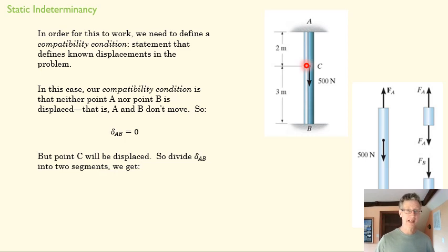We know C is in the middle, so AC, the length of AC, plus the length of CB, is going to add up to this, right? And so we can say that the change in the length of AC minus the change in the length in CB is equal to zero.